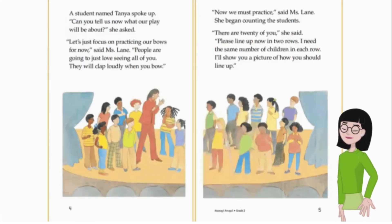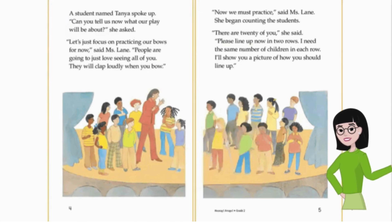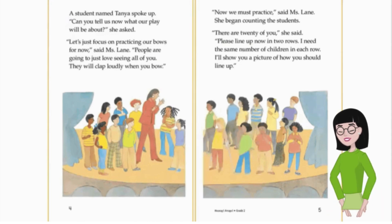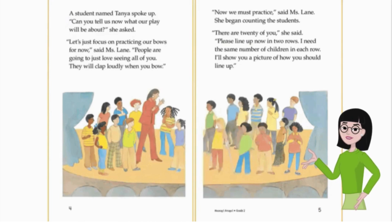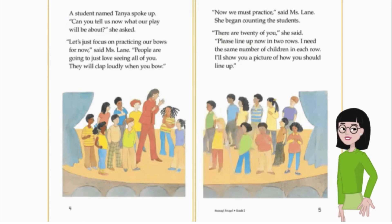A student named Tanya spoke up. 'Can you tell us now what our play will be about?' she asked. 'Let's just focus on practicing our bows for now,' said Ms. Lane. 'People are going to just love seeing all of you. They will clap loudly when you bow.' She began counting the students. 'There are 20 of you,' she said. 'Please line up now in two rows. I need the same number of children in each row.'